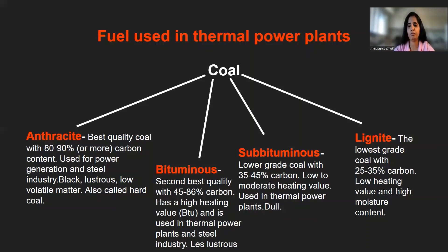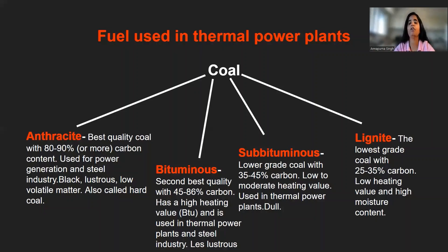The third quality is sub-bituminous. This is not a good quality coal and has a carbon content of 35 to 45 percent with a low to moderate heating value. It is also used in thermal power plants for power generation but is dull. The lowest grade coal is lignite, with only 25 to 30 percent carbon content, a low heating value, and high moisture content.